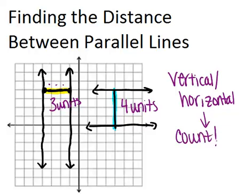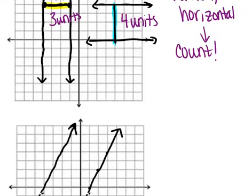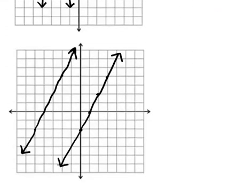Now, if the lines are not vertical or horizontal — meaning they are more slanted, like this — it is a little bit more complicated. But the idea is the same: the shortest distance between these two lines will be a line that is perpendicular to both. So in order to figure out what that perpendicular line looks like, we need to think about slopes. Parallel lines have the same slopes, so if we look at both of these lines, we'll figure out that the slope of each of them is two.